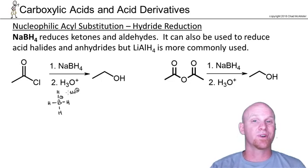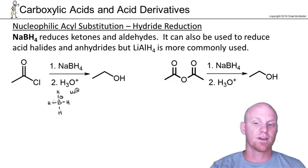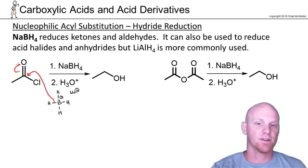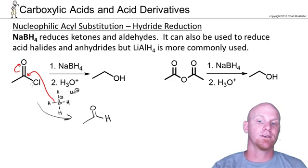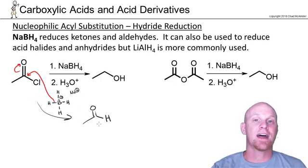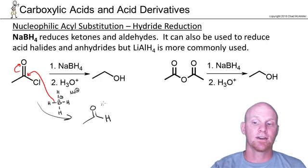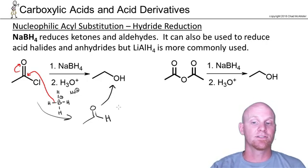We're going to start with sodium borohydride. One of these hydride ions can break off and attack the carbonyl. We find out that initially it's just going to do nucleophilic substitution — the mechanism is similar to what we've already shown for nucleophilic acid substitution — and the end result is you're going to have a hydrogen replacing the chlorine. But because now you have an aldehyde, you can reduce ketones and aldehydes with sodium borohydride, so it'll react again, and you can't stop it.